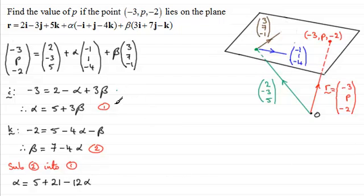So if we add 12α to both sides, we're therefore going to get 13α equals 5 + 21, which is 26. Dividing both sides by 13 gives us α = 2.